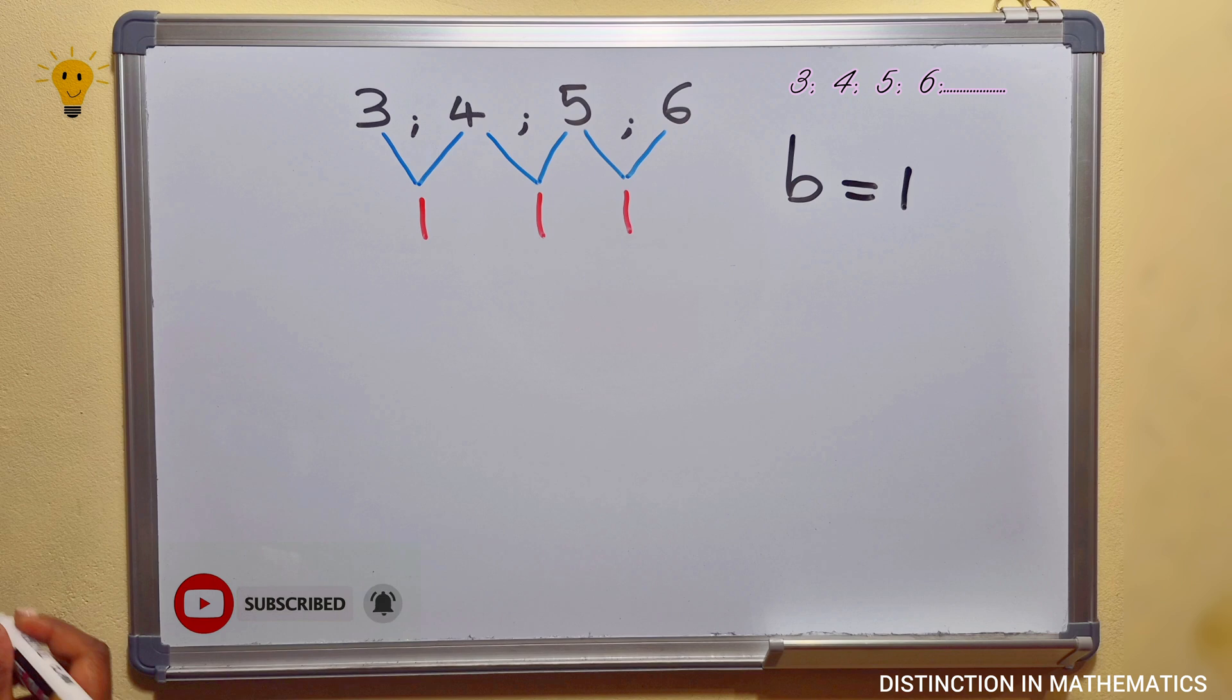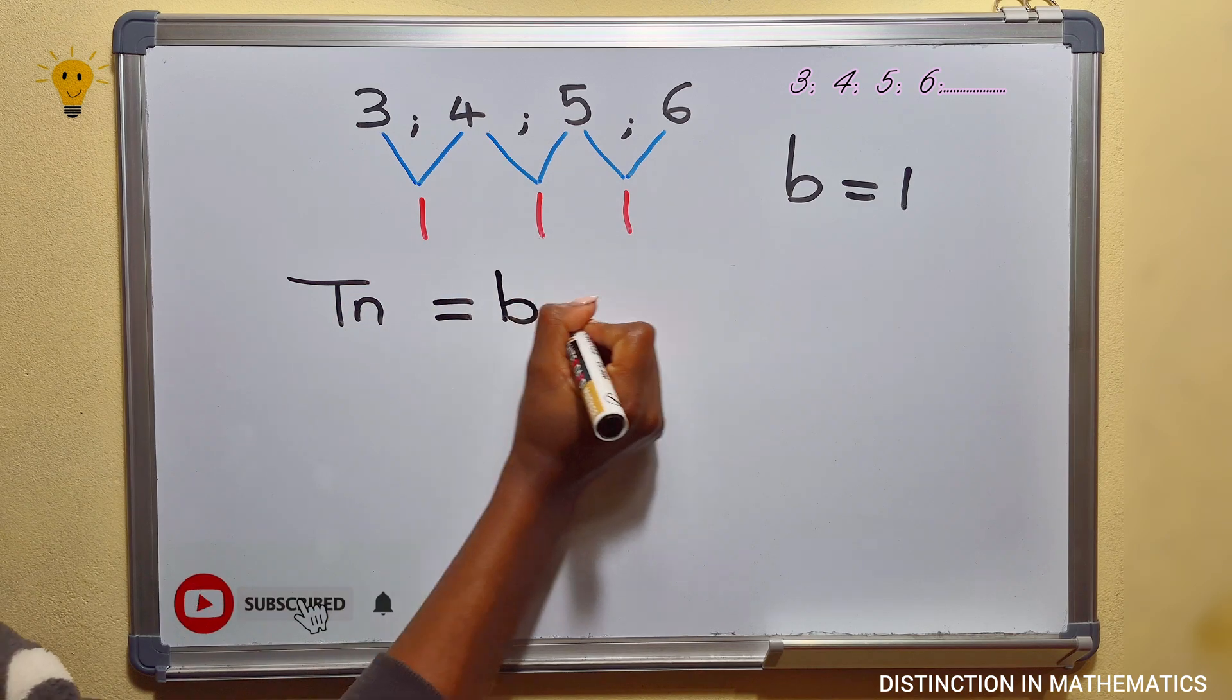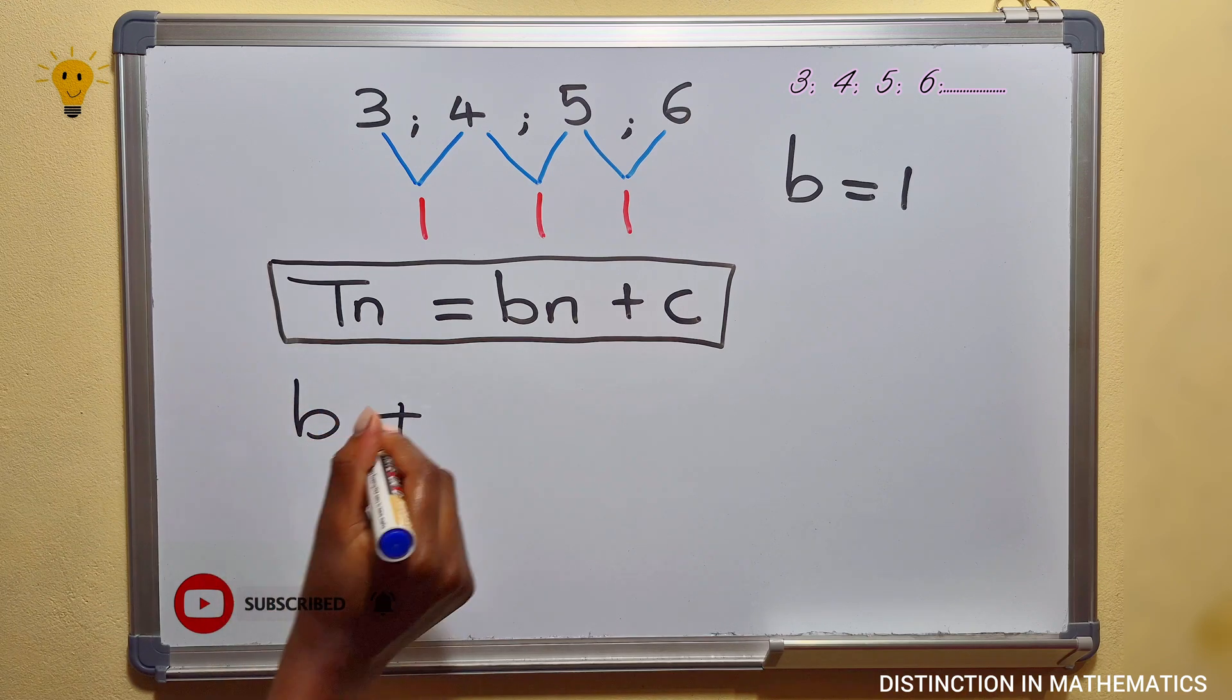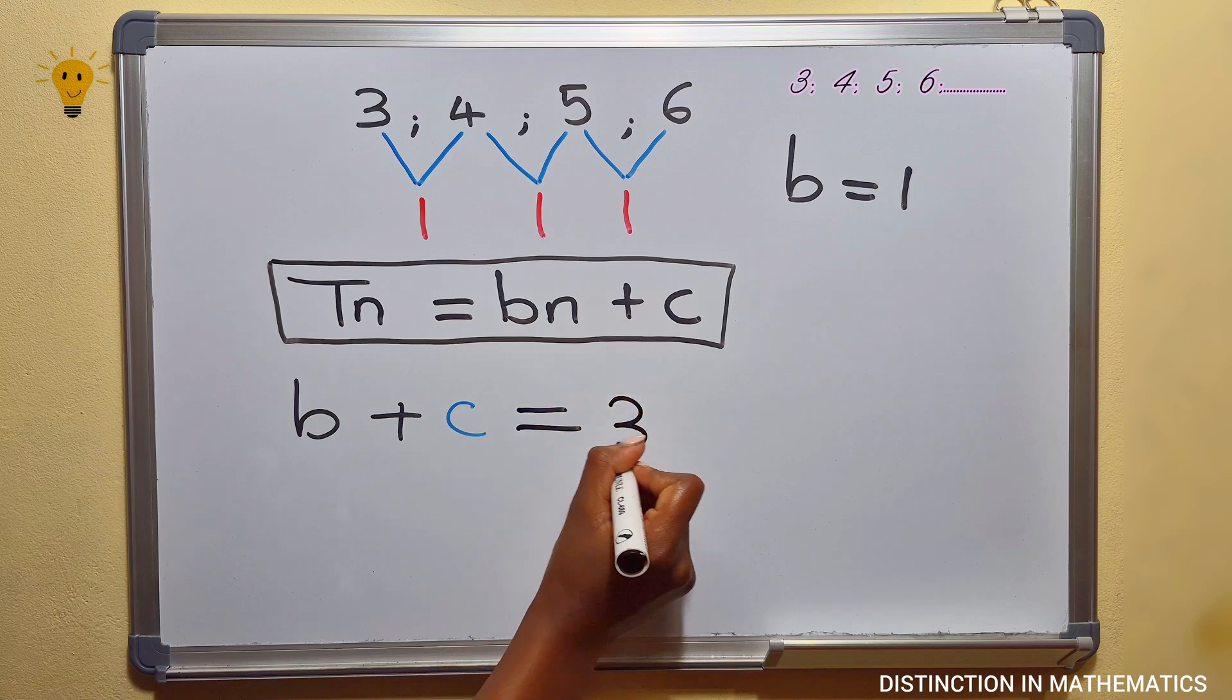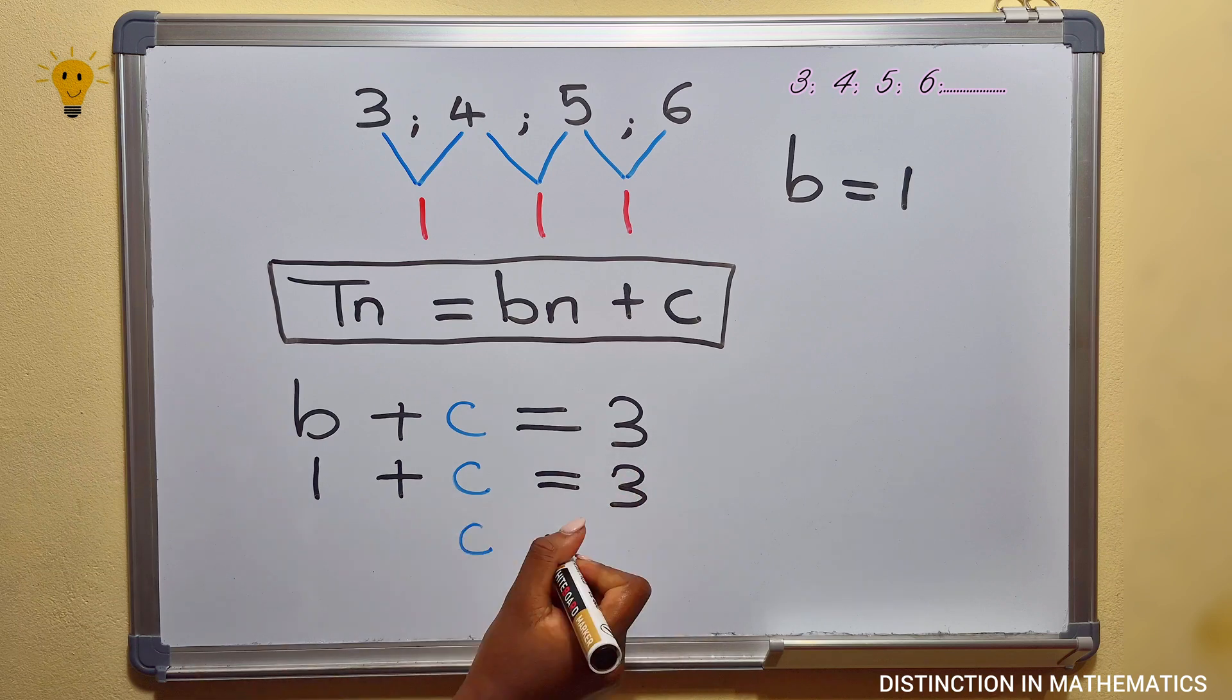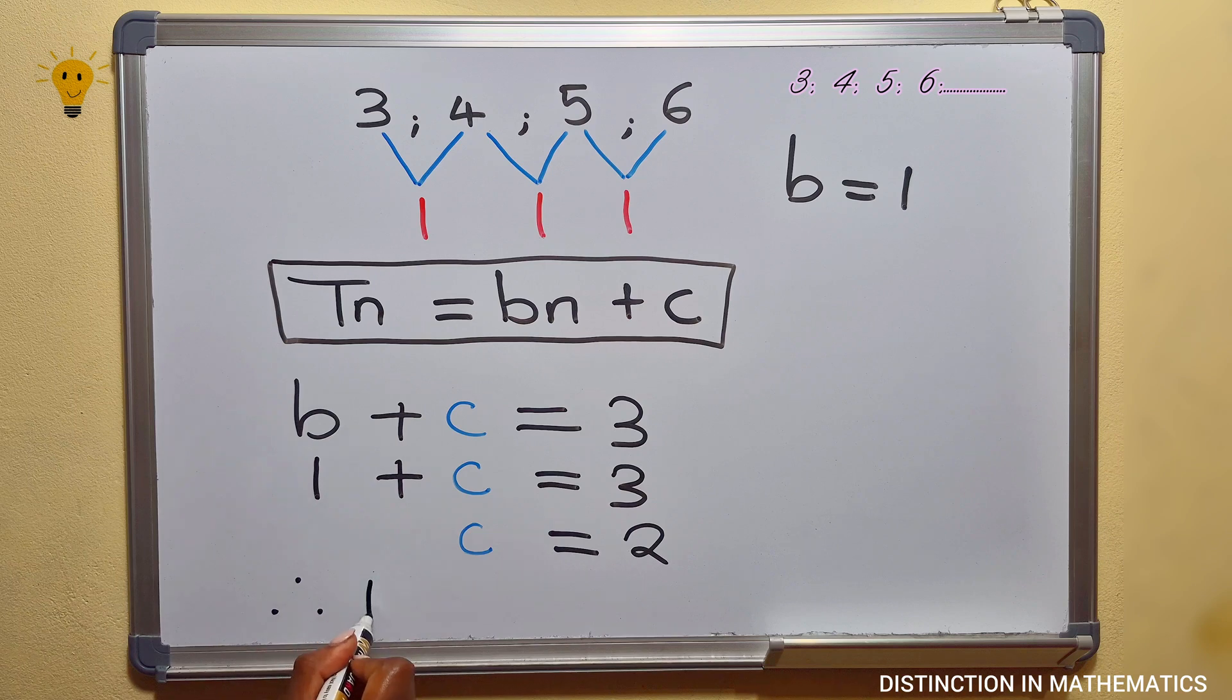We can now move on to the questions. The first question is to determine the nth term. Remember, the general term for linear number patterns is Tn equals bn plus c, so we need to know the value of b and c. The value of b is 1. To find the value of c, we have b plus c equals a, where a is the first number that you are given. Take 1 to the other side of the equal sign and solve for c. Now we can write the nth term for this pattern, which is Tn equals n plus 2.